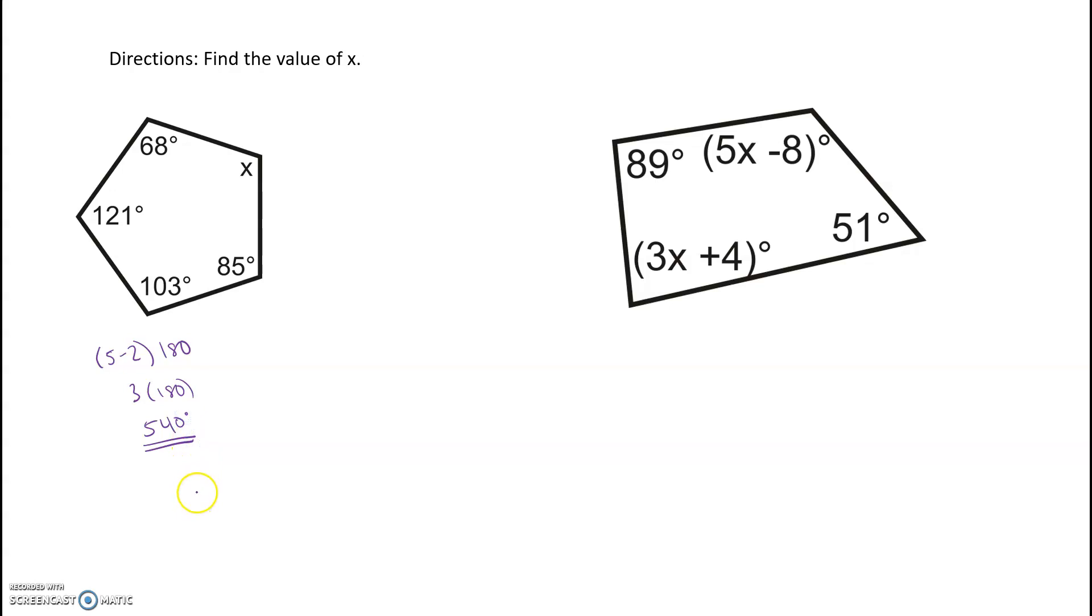We know that the interior angles should add up to 540 degrees. Now understand, we haven't answered the question. This right here is the sum of the interior angles, so this is what all these angles should add up to. We know 68 plus 121 plus 103 plus 85 plus x.